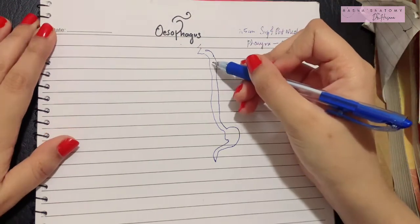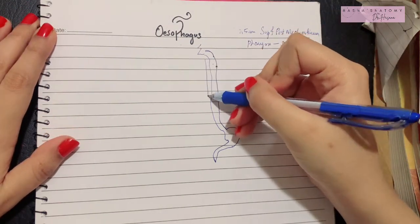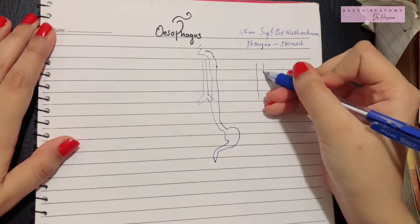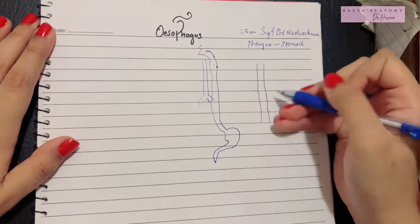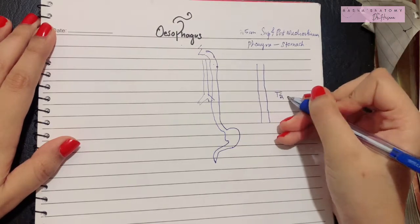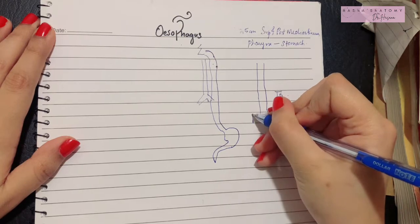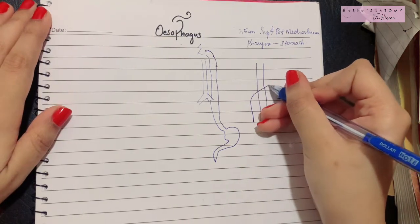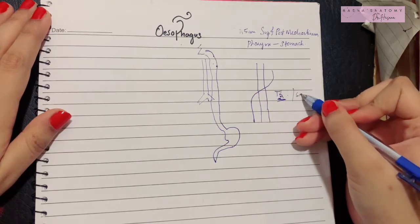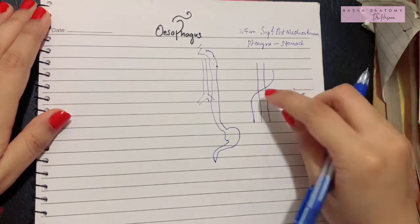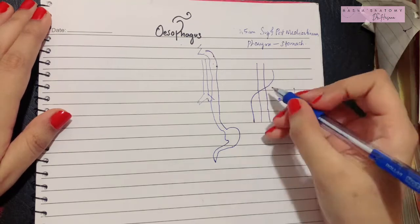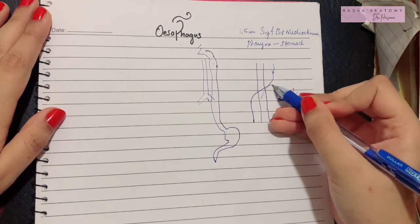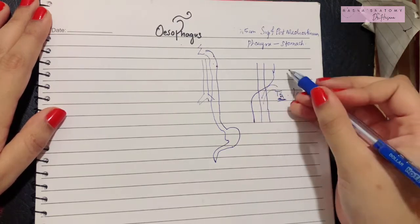A couple of important relations of the esophagus: anteriorly lies the trachea. Another very important relation is that in the superior mediastinum, at the level of T5, the esophagus is crossed by the thoracic duct, which normally lies towards its right and crosses from right to left at this level. Apart from this, the esophagus also has the aortic arch towards its left, the left lung, and left pleura.